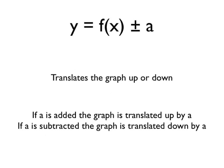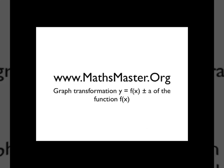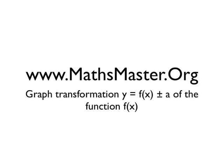To recap what we've learned: we've looked at the graph transformation y = f(x) ± a, and found that this translates the graph up or down along the y axis. If you add a to the function, the graph is translated up by the value a. If you subtract a, the graph is translated down by a. That was the graph transformation y = f(x) ± a. If you want to see more maths videos, please visit mathsmaster.org.